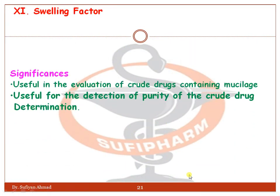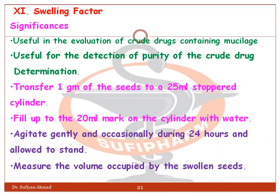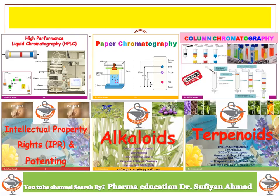Swelling factor: this is significant and useful in the evaluation of crude drugs containing mucilage, and is useful for detection of the purity of the crude drug. Procedure: transfer one gram of the seed to a 25 ml stoppered cylinder, fill up to the 20 ml mark with water, agitate gently and occasionally during 24 hours, and allow to stand. Measure the volume occupied by the swollen seed. This concludes my video.